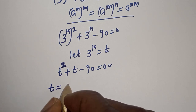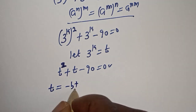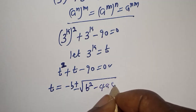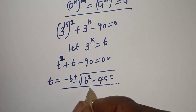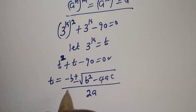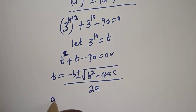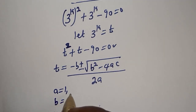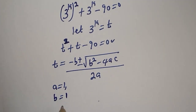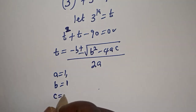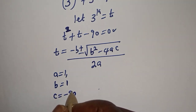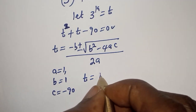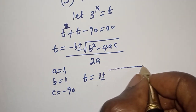Let's solve this using the quadratic general formula: t equals negative b plus or minus square root of b squared minus 4ac, all over 2a. From this equation, a is equal to 1, b is equal to 1, and c is equal to negative 90.